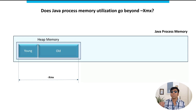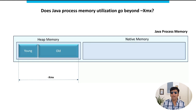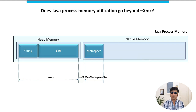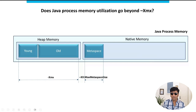After that, there are other regions that come from native memory. The first region is metaspace. To execute your program, your application needs metadata — the class definitions and metadata definitions required to execute your program. Those are stored in this metaspace region.